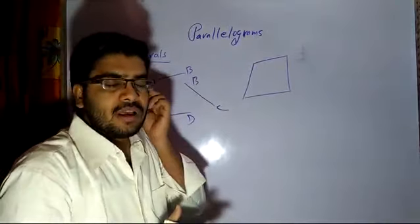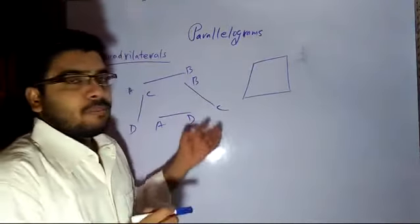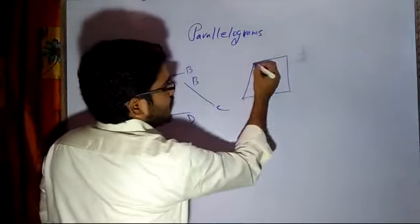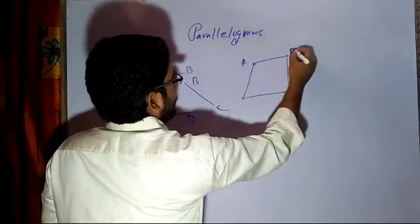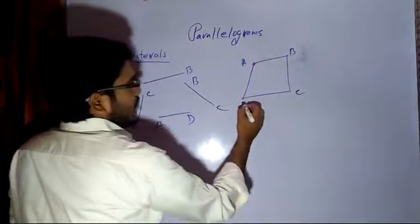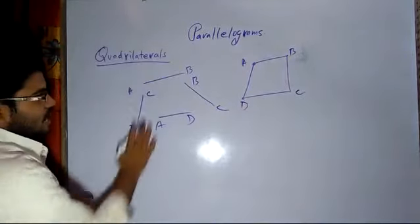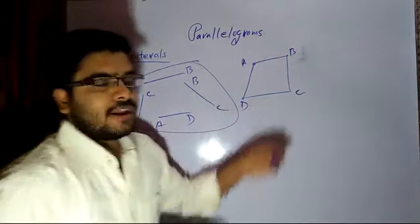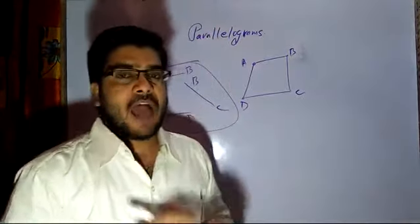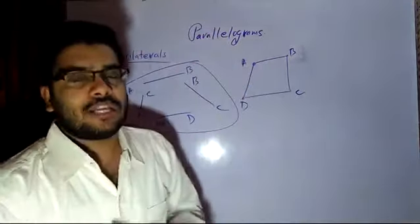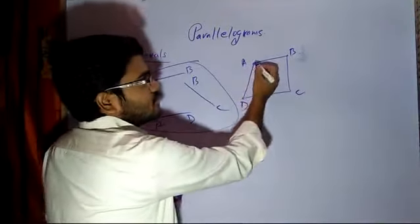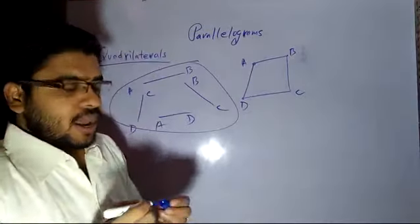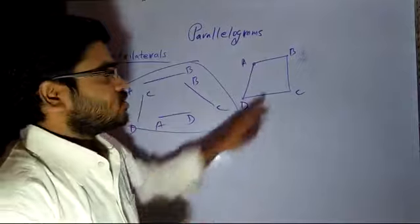A rectilinear figure formed by joining these line segments — this is a closed, enclosed figure. We will be having AB, then BC, then CD, A to D and C to D. If I join all these line segments in such a way that it forms a closed figure having 4 sides, then it will be called as a quadrilateral. So, a quadrilateral is a plain closed figure enclosed by 4 line segments.